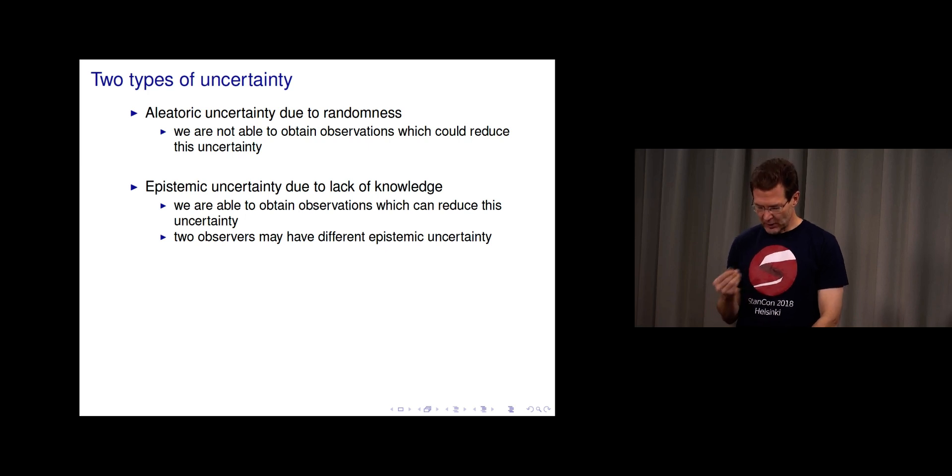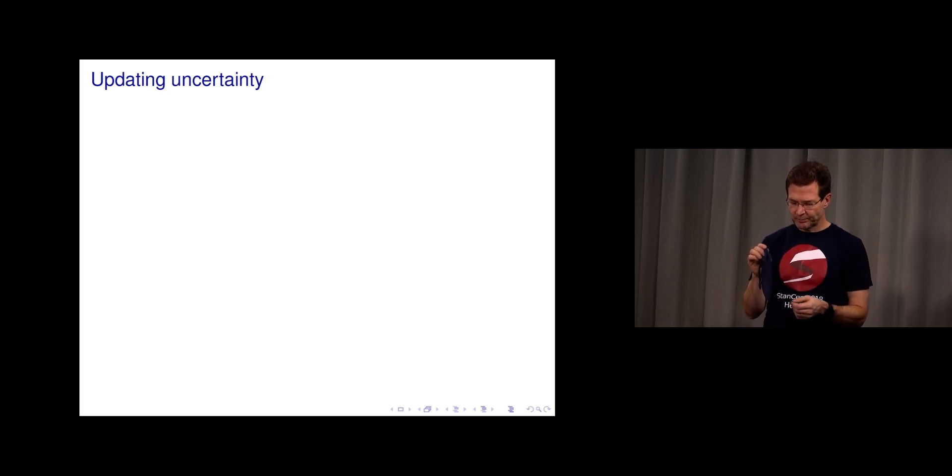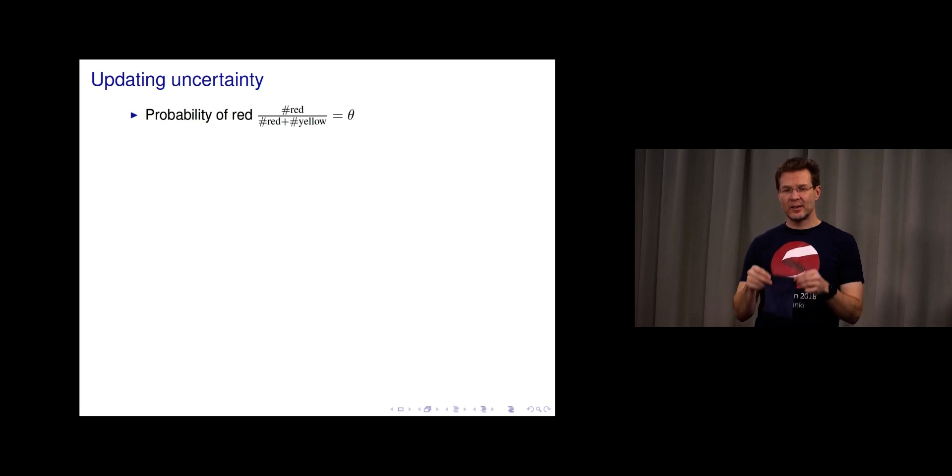I'll show a bit more complex case. I have here a pack of chips. I have there yellow and red chips. I can show you this red one. If I would tell you how many red ones and yellow ones there are, you could then compute the probability of what is the color of the next chip I pick up by computing this ratio of reds to total number.